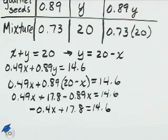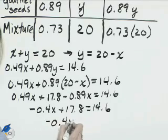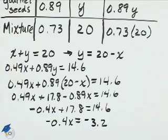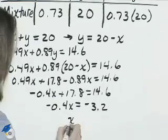Subtract 17.8 to the right. That's negative 0.4X on the left and negative 3.2 on the right. Divide both sides by negative 0.4 and X is 8.